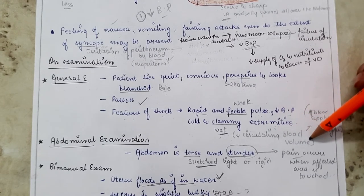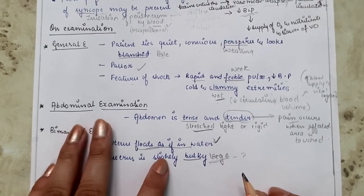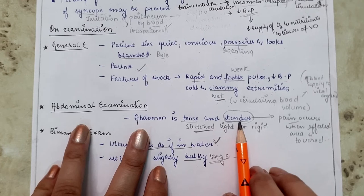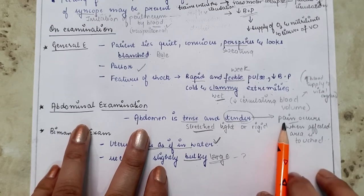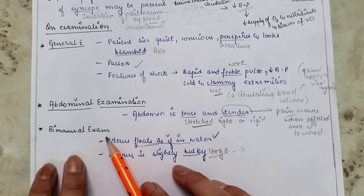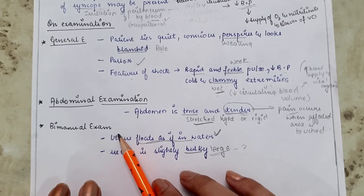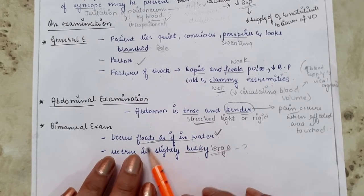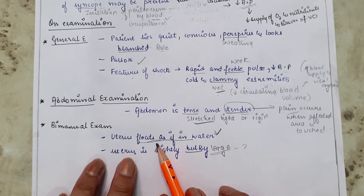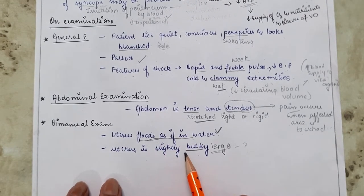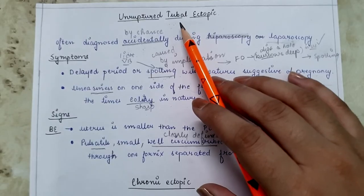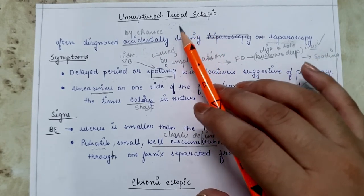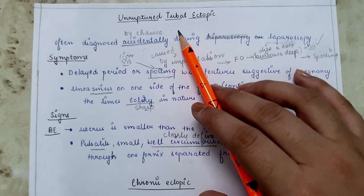On abdominal examination the abdomen is tense and tender. On bimanual examination the uterus floats as if in water due to blood inside the uterine cavity, and the uterus is slightly bulky. For unruptured tubal ectopic, diagnosis is often made incidentally during laparoscopy. Symptoms include delayed period, amenorrhea, or spotting with features suggestive of pregnancy.